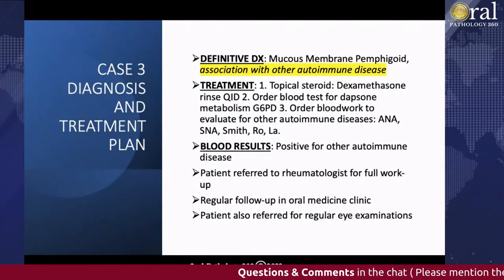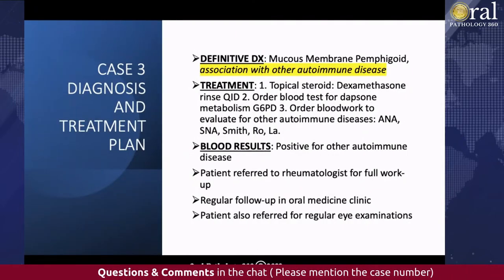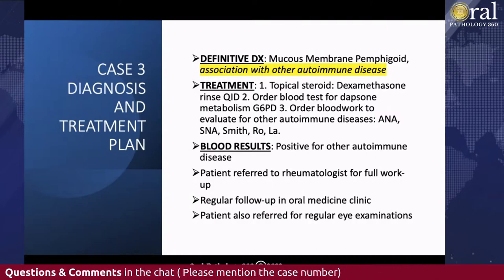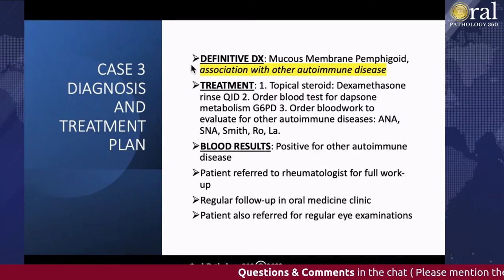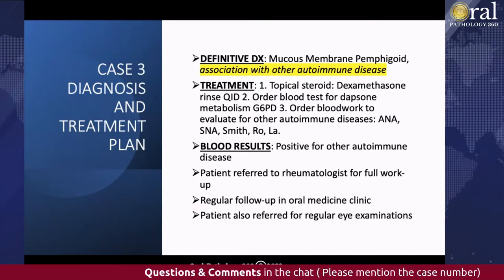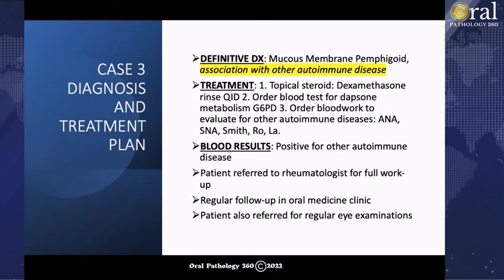The definitive diagnosis was mucous membrane pemphigoid. There was an additional interesting finding — the immunofluorescence pattern corresponded to mucous membrane pemphigoid along with an association with another autoimmune disease. We all know that autoimmune diseases can run in pairs or multiples. We needed to work up the patient to find out what other autoimmune disease they may have. I treated this patient with a topical steroid dexamethasone rinse QID.